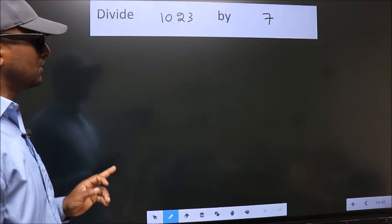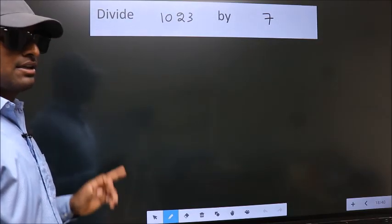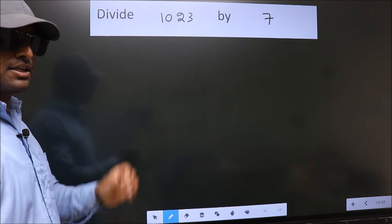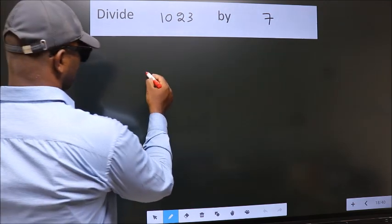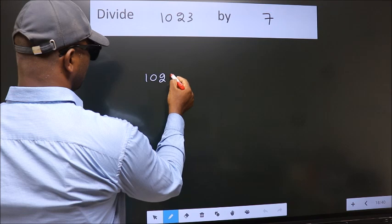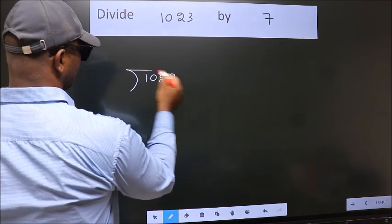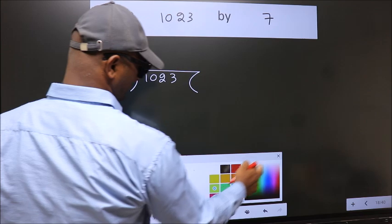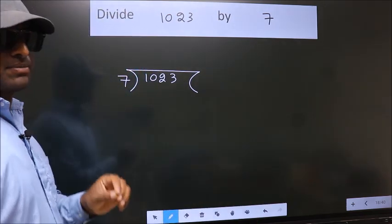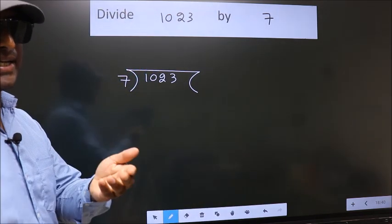Divide 1023 by 7. To do this division, we should frame it in this way. 1023 here, 7 here. This is your step 1. Next.